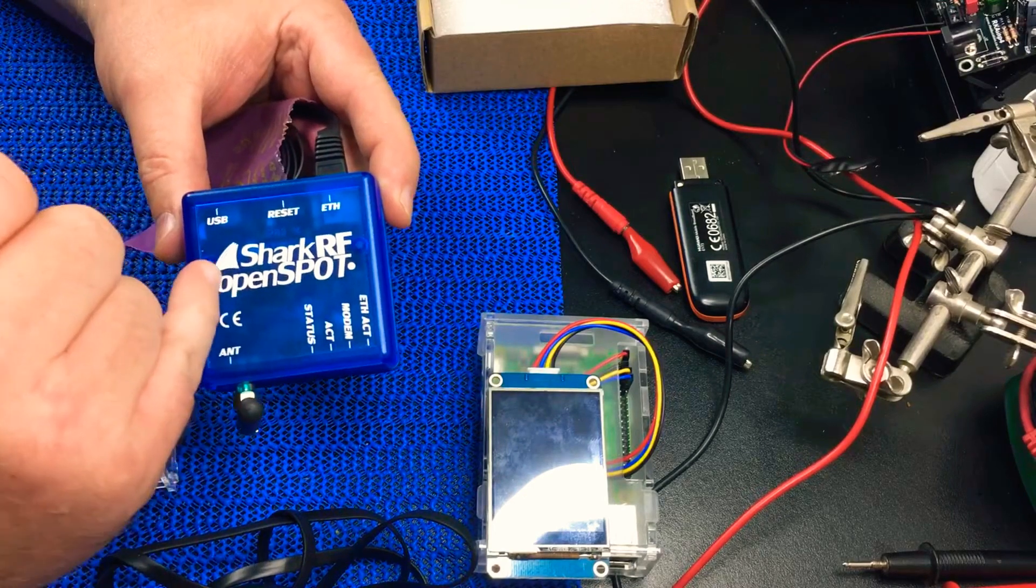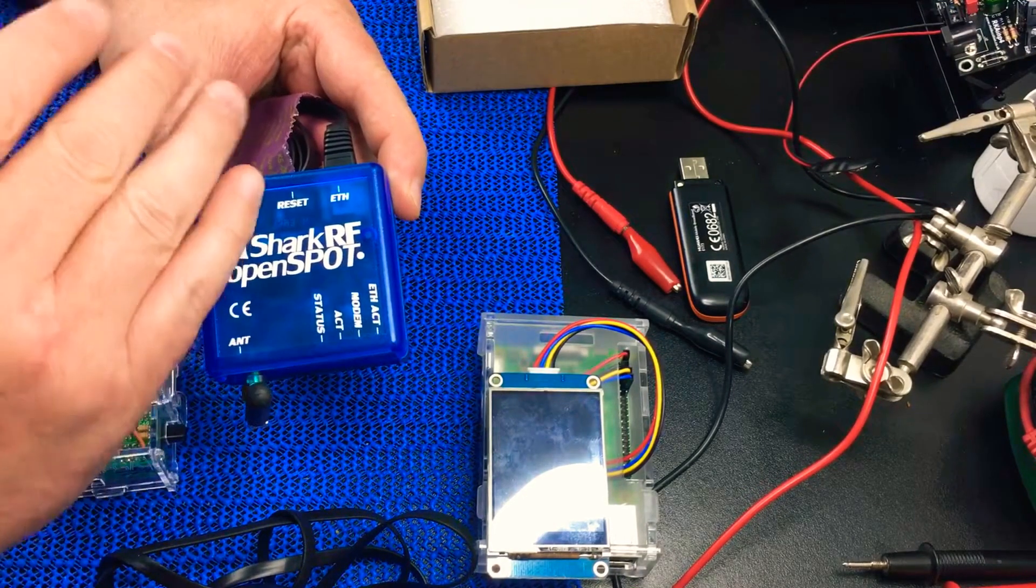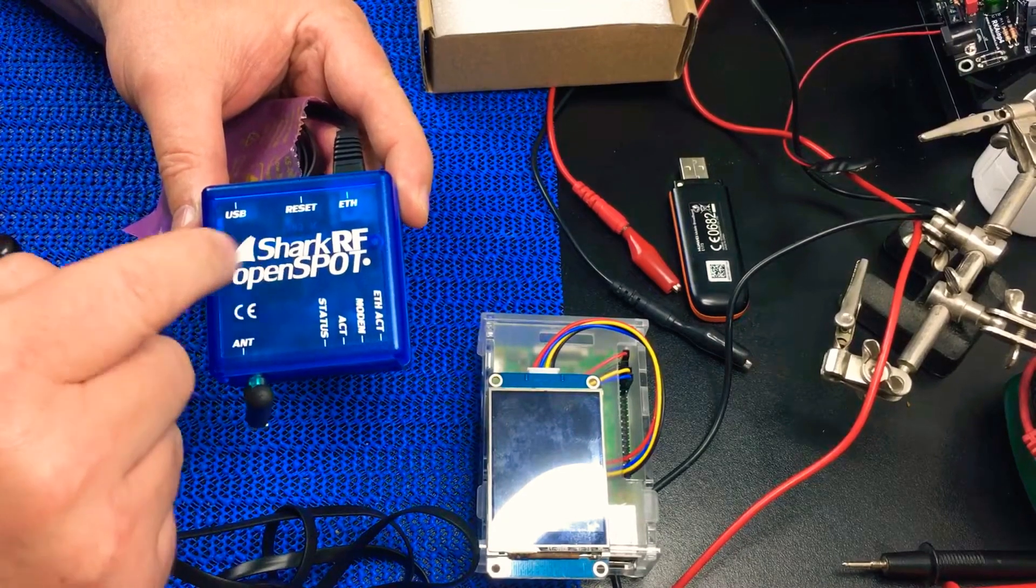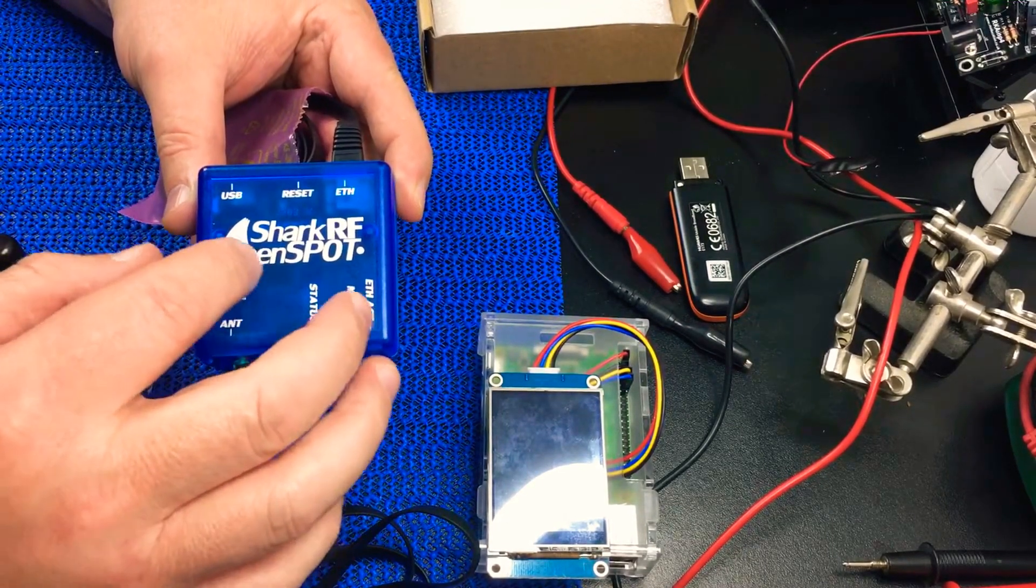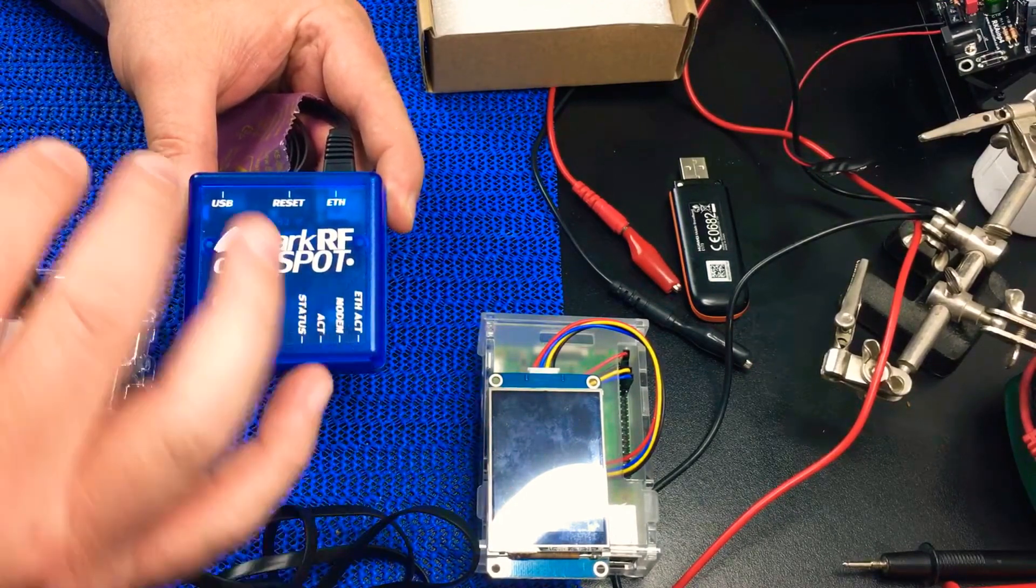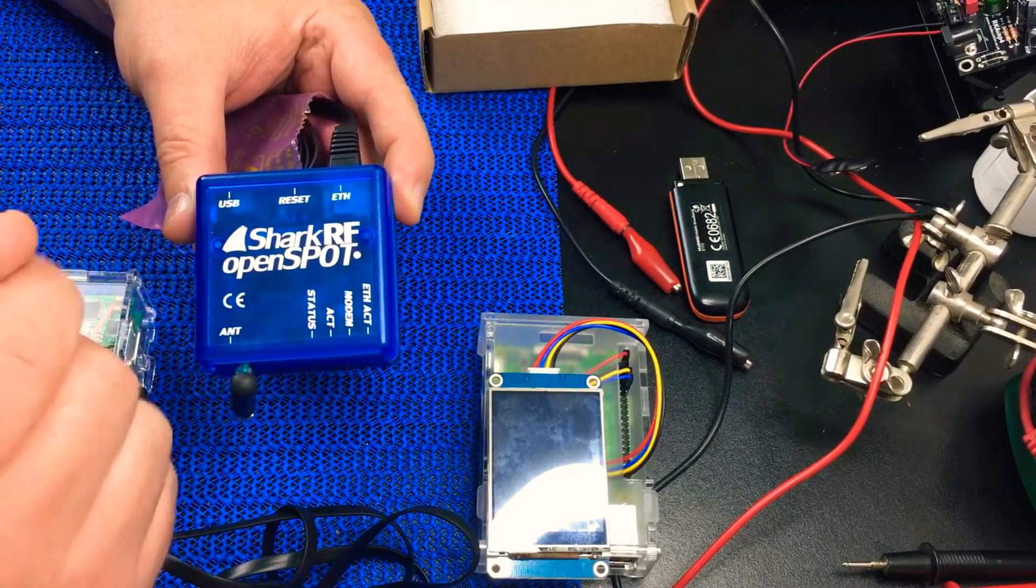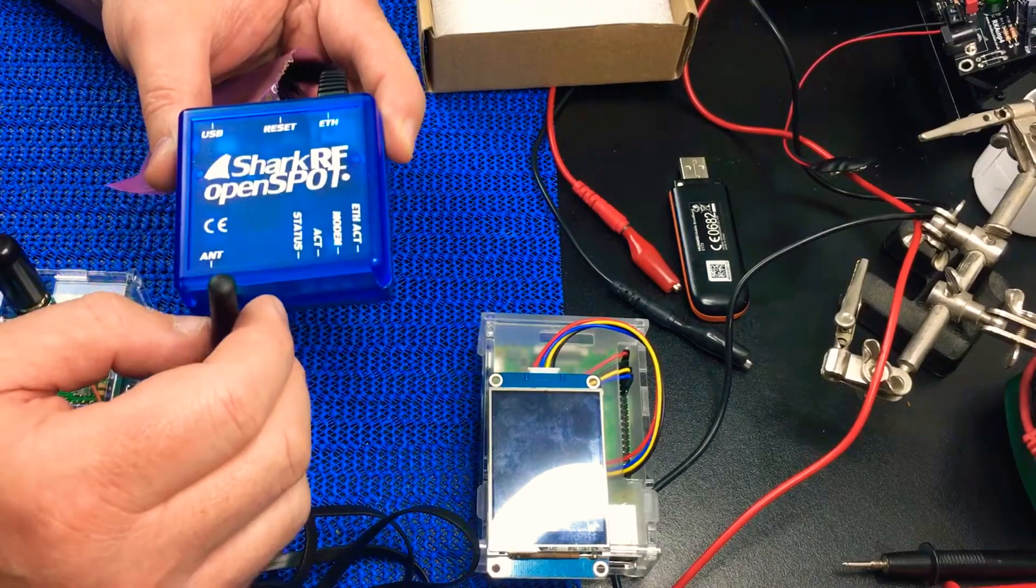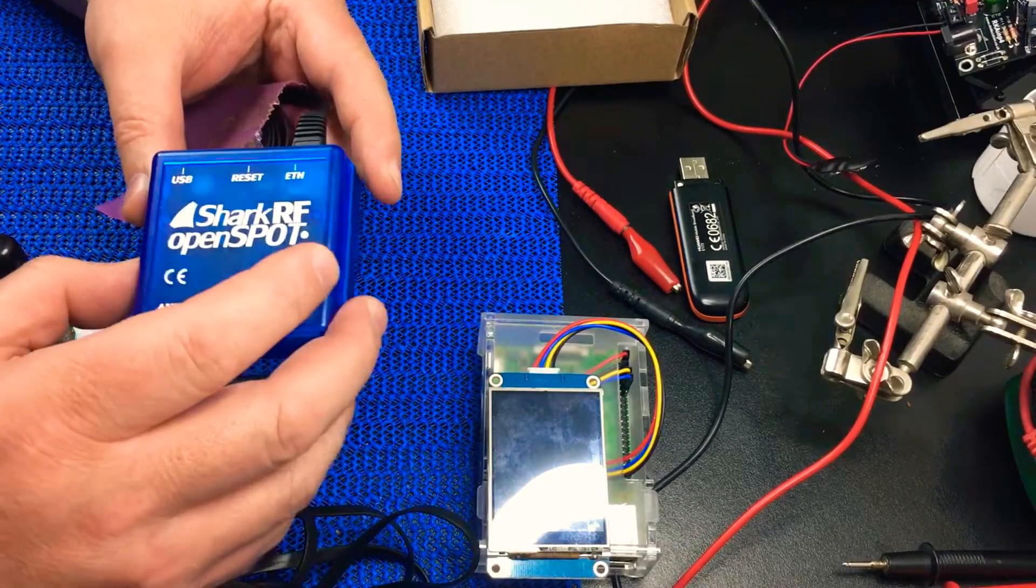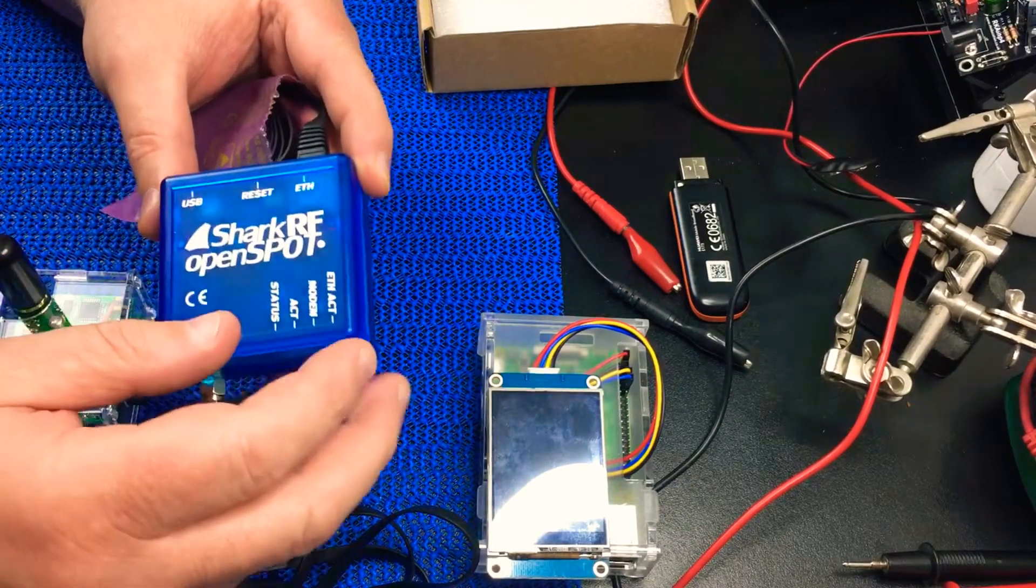What this one does above and beyond the DV4 or the DV Mega is that it will allow cross mode, so you can go from DMR through to C4FM or C4FM to DMR, but it won't allow that same cross mode on D-star at the moment. That's not to say it's ruled out, it just may be a firmware thing.